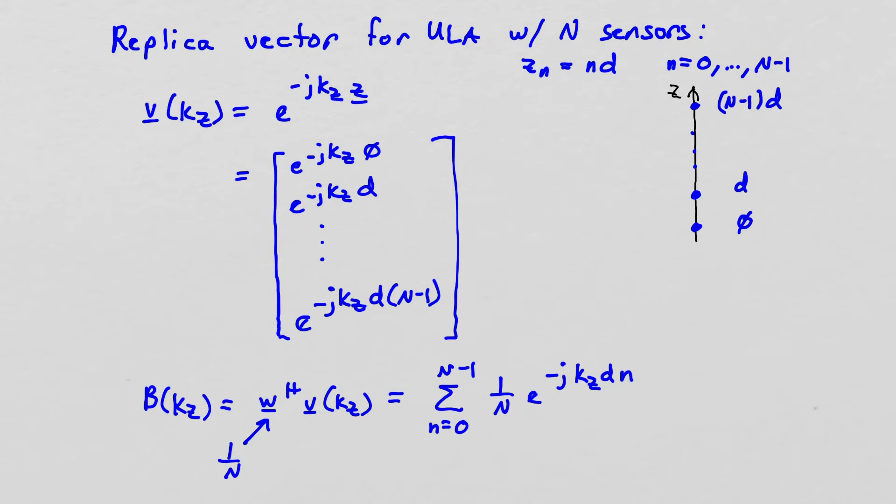So our narrowband replica for a ULA with n sensors, we're assuming our array is oriented along the z-axis. Just for convenience, I'm assuming the n sensors start with a sensor at 0 meters, and then they're spaced out d meters because it's uniform line array. So it's uniform spacing with sensor spacing of d, that goes all the way up to n minus 1 times d is the sensor farthest away from the first sensor. So our replica vector, v of kz, is defined simply as our complex exponential.